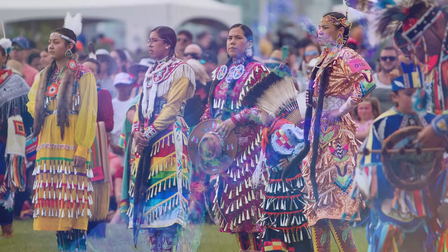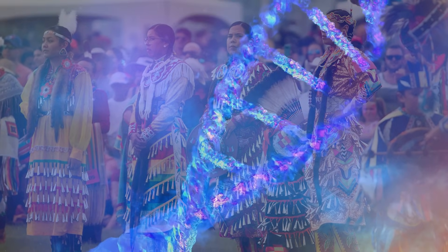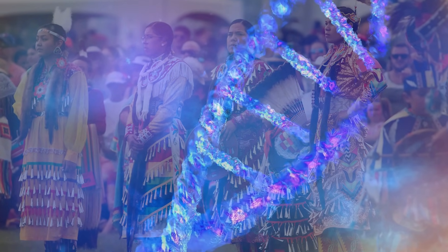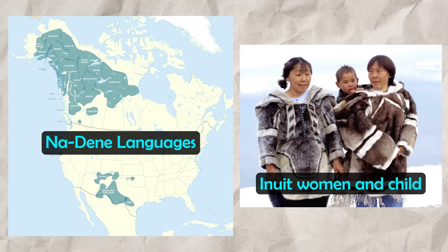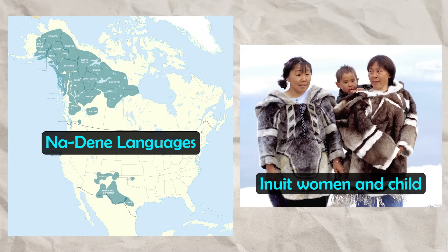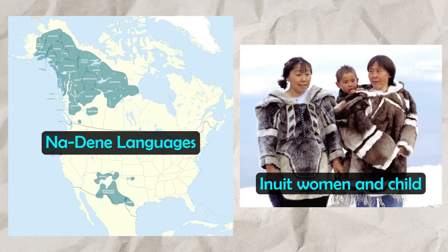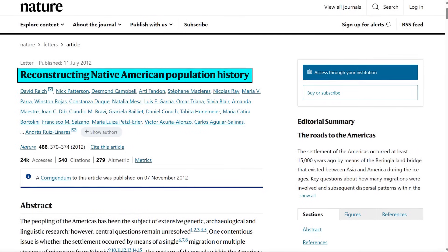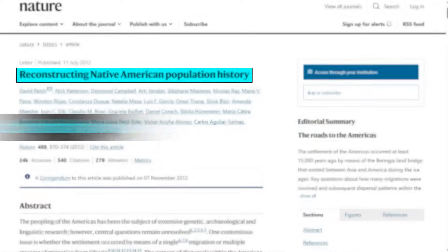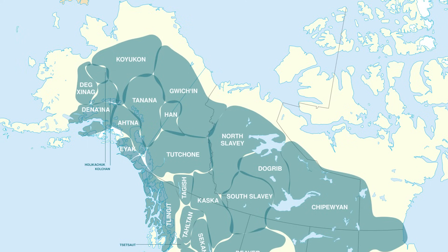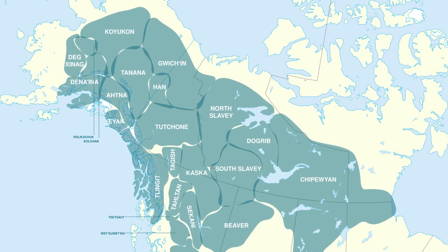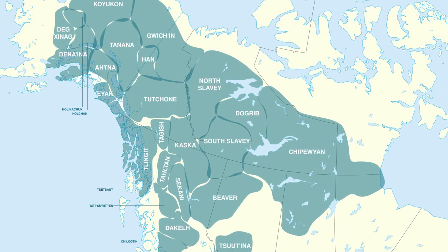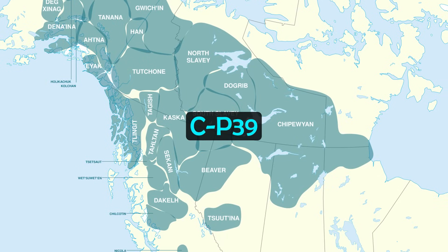After the initial peopling, additional migration waves from Asia contributed new genetic threads to northern North America. The ancestors of Na-Dene and Inuit peoples represent later arrivals who had mixed with or supplanted earlier groups in certain regions. A 2012 study published in Nature found that the initial peopling of the Americas happened in at least three main waves, all from Asia. Ancestors of the Na-Dene language family introduced higher levels of the Y-chromosomal haplogroup C-P39, for example.